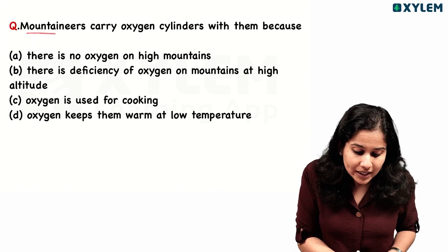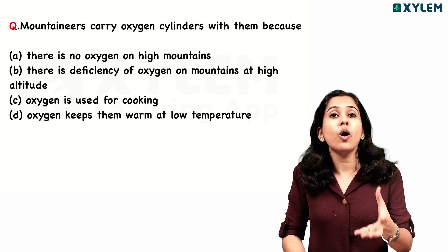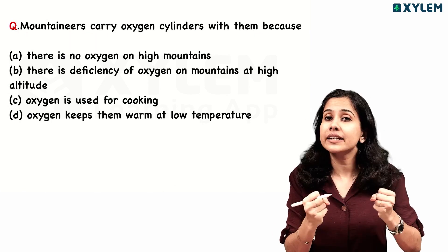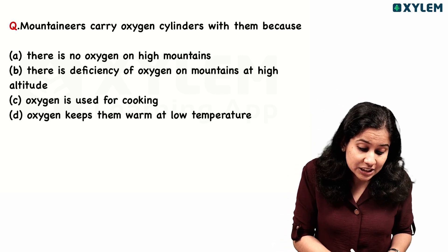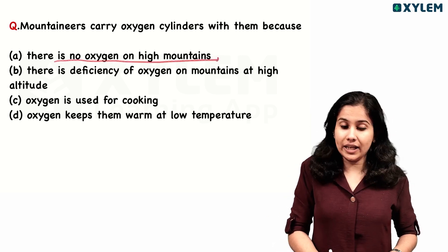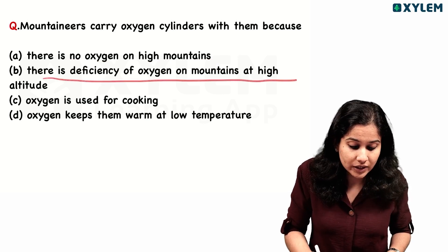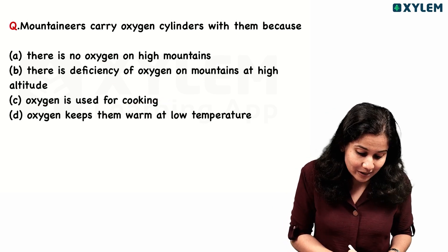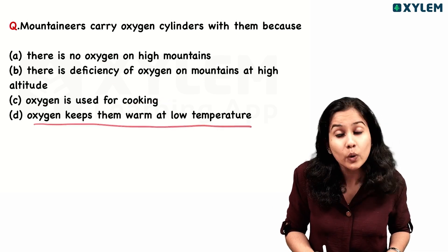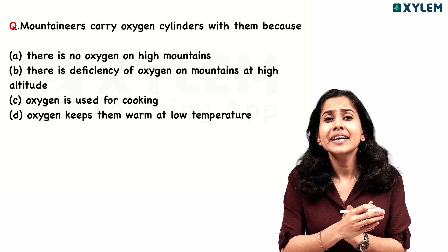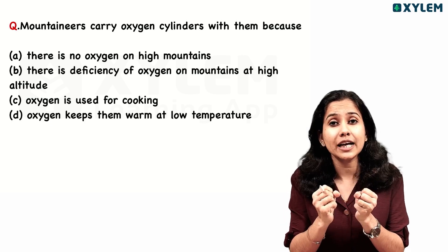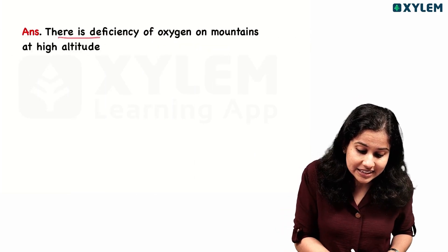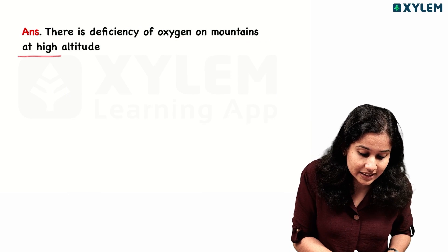The mountaineers carry oxygen cylinders with them because: There is no oxygen on high mountains. There is deficiency of oxygen on mountains at high altitude. Oxygen is used for cooking. Oxygen keeps them warm at low temperature. These are the options we need to consider.